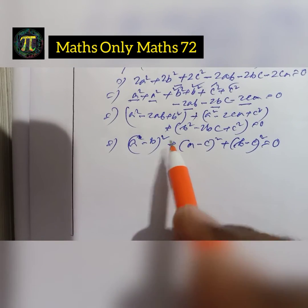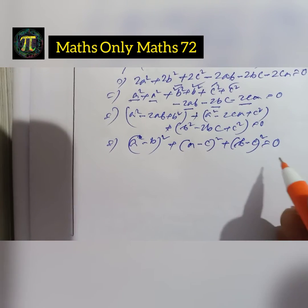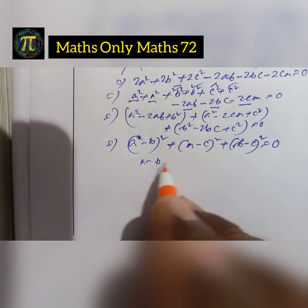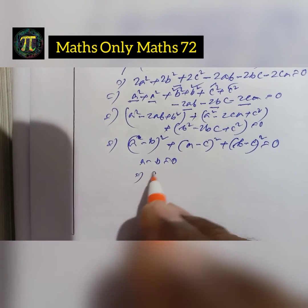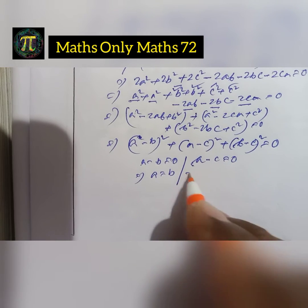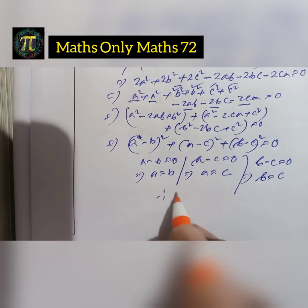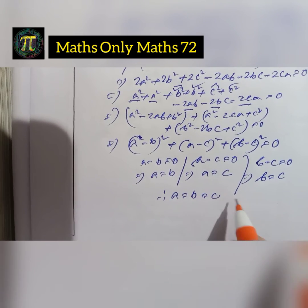If and only if each quantity is 0, then the sum of positive quantities is 0. So a-b=0 or a=b. a-c=0 or a=c. And b-c=0 or b=c. Therefore a=b=c.